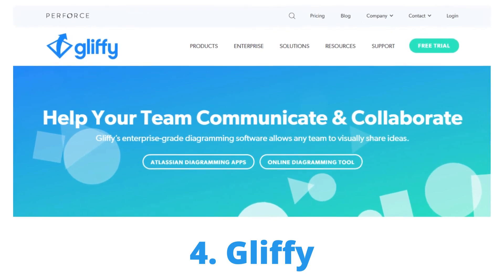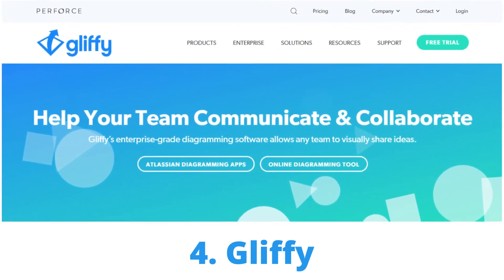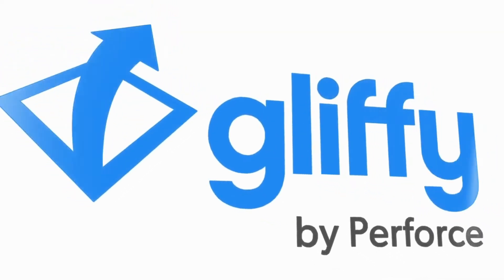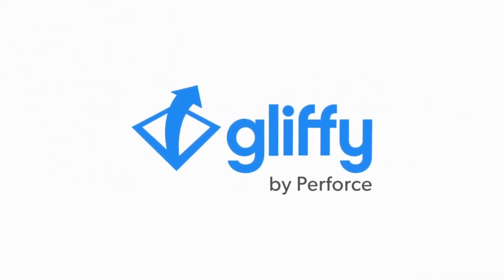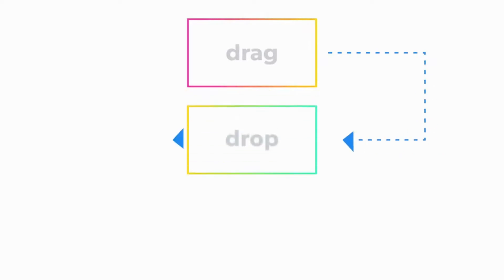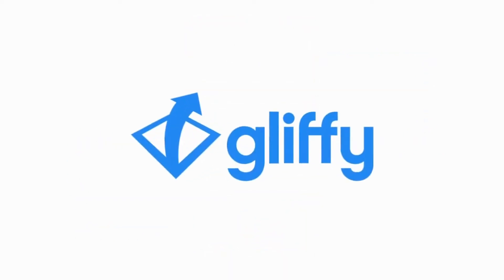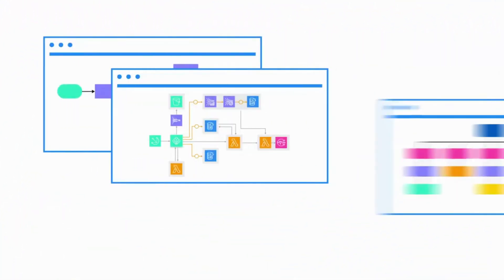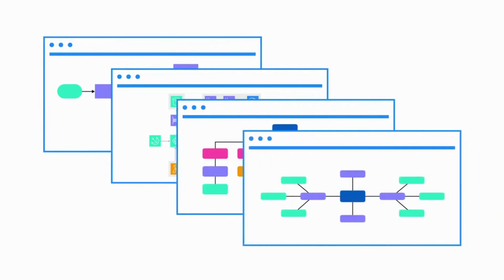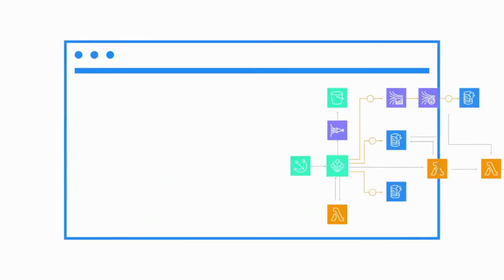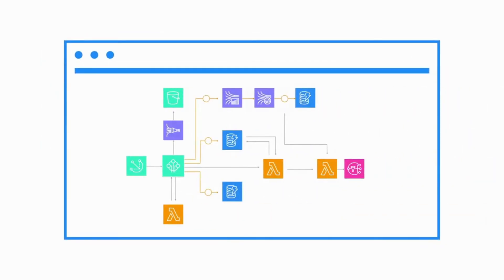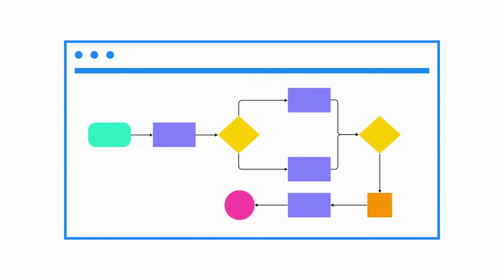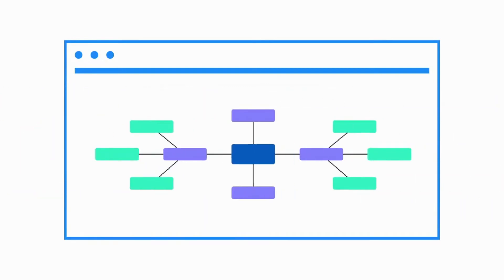Number four: Gliffy. Best for ensuring team collaboration and communication is at an all-time high. With Gliffy, creating an org chart is easy — you can create your team, choose the right size and shape for your company's structure, then start adding in who you need to get started. Any team may use Gliffy's enterprise-grade diagramming solution to visually communicate ideas, whether that's a visual organization chart, a process map, or a website wireframe to perfectly communicate your team's vision.